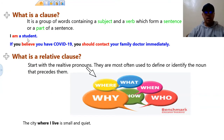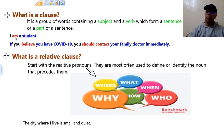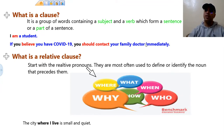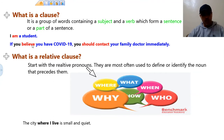Example number one: "I'm a student." So this is a clause and at the same time is a sentence. Here we have the subject "I" and the verb "am" — the verb to be. Number two: "If you believe you have COVID-19, you should contact your family doctor immediately." So this is a sentence which contains two clauses. Clause one: "If you believe you have COVID-19" — here we have subject "you" and the verb "believe." Clause two: "You should contact your family doctor immediately" — the subject is "you" and "should contact" is the verb.